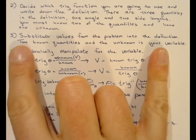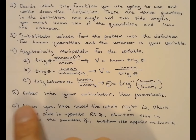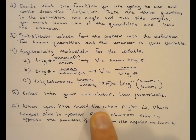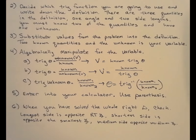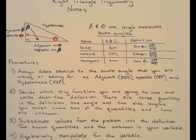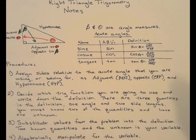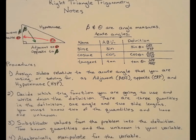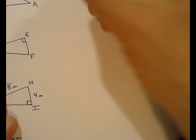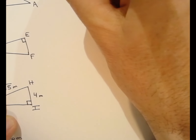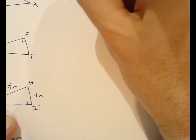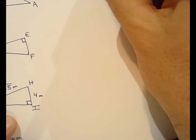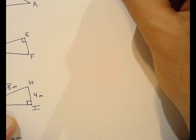Just to remind you: I will provide these definitions on tests. Sine of theta is opposite over hypotenuse. Cosine of theta is adjacent over hypotenuse. Tangent of theta is opposite over adjacent. Now let's get to some examples. Step one is to assign sides as opposite, adjacent, or hypotenuse relative to the acute angle; step two is to decide which trig function to use; and step three is to substitute in the values.